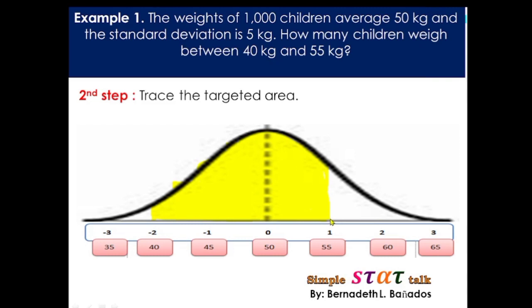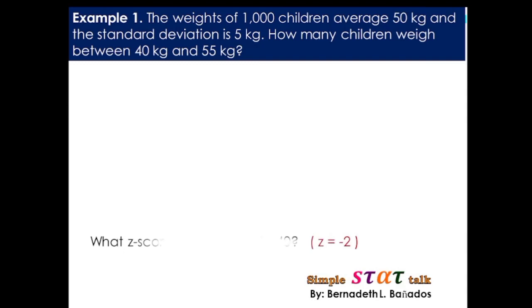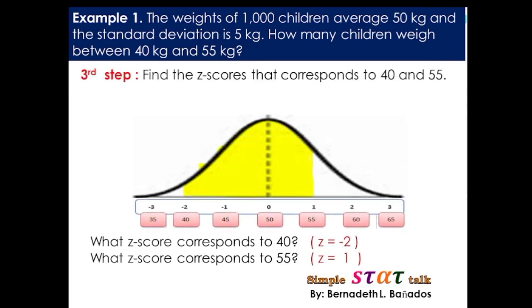Now, in case the raw score is not directly seen in the graph, we have to use the formula. So, yung una nating hinahanap ay kung anong z-score under si 40 kg, and kung anong z-score under si 55 kg, since we will be needing the z-scores to locate or to know the probability in the z-table. Kung 40 kg ang gagamitin natin, we cannot use the z-table. So, we have to convert it first to z-score. Assuming na hindi natin nakikita kung ano yung value ni 40 in the graph, gagamitin natin yung formula.